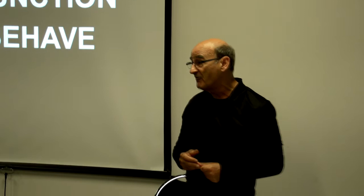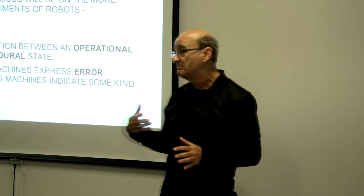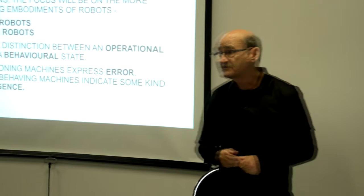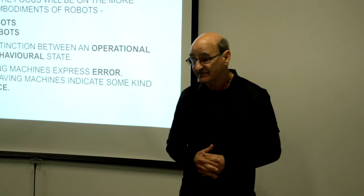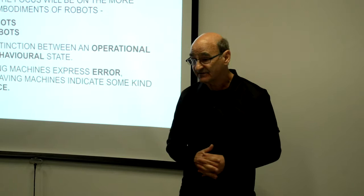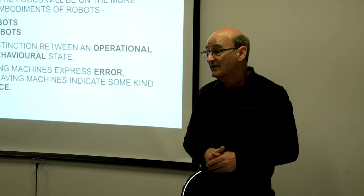I want to make a distinction between malfunctioning and misbehaving. Although this might be a trivial semantic distinction, I think it's important in the context of social interaction. For me, malfunctioning means effectively that a machine or a robot can, through error, not perform as it's programmed to do. The word misbehaving suggests, though, that the robot is somewhat autonomous and somewhat intelligent.